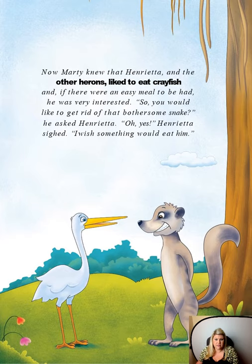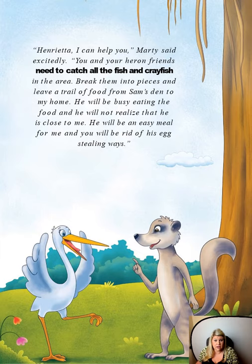Marty knew that Henrietta and the other herons liked to eat crayfish, and if there wasn't an easy meal to be had, he was very interested. 'Would you like to get rid of the bothersome snake?' he asked Henrietta. 'Oh yes,' Henrietta sighed. 'I wish something would eat him.' Henrietta was mad at Sam the snake for eating two of her eggs. 'I can help you,' Marty said. 'You and your heron friends need to catch all the fish and crayfish in the area, break them into pieces, and leave a trail of food from Sam's den to my home. He will be busy eating the food and will not realize he is close to me — he will be an easy meal for me, and you will be rid of his egg-stealing ways.'